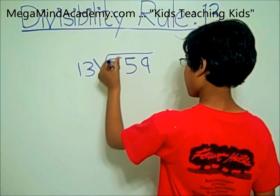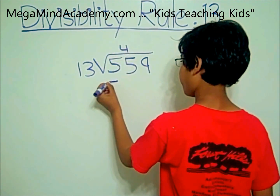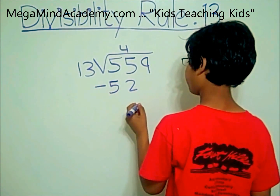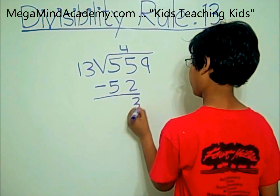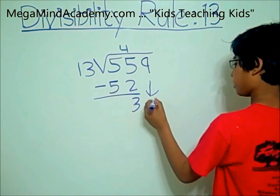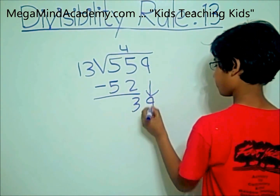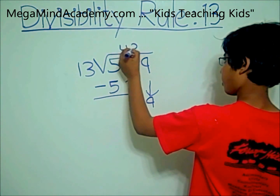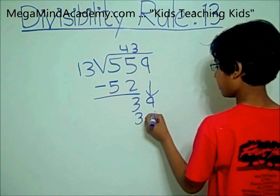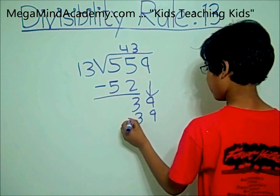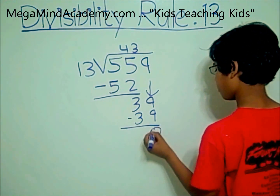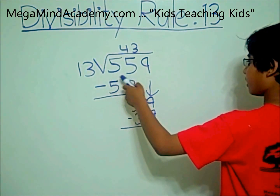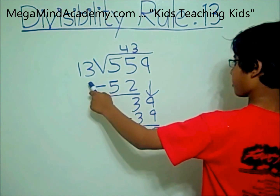13 times 4 equals 52. So you subtract it from 55 and you get 3. Now you bring the 9 down and it becomes 39. And 13 times 3 equals 39. So you subtract and you get 0. Since 0 is the remainder, 559 is divisible by 13.